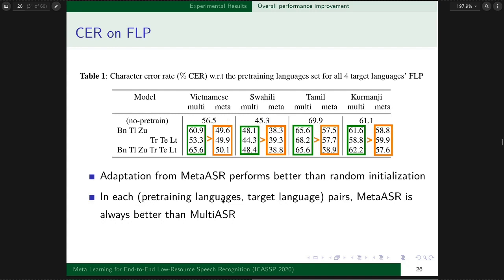We have the following observations. First, adaptation from meta-ASR performs better than random initialization. The values in the orange square are always smaller than in the green square. Second, in each pre-training and target language pair, meta-ASR is always better than multi-ASR. The orange square values are smaller than the green square values for multi-ASR.